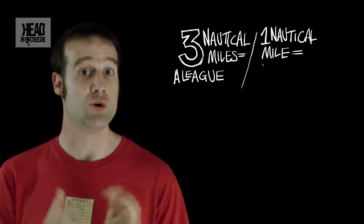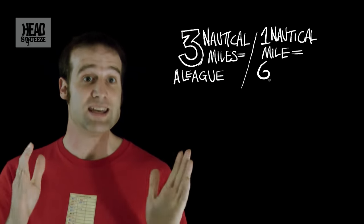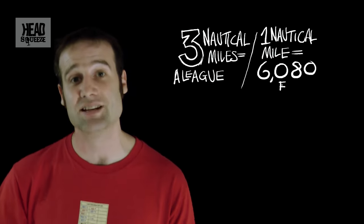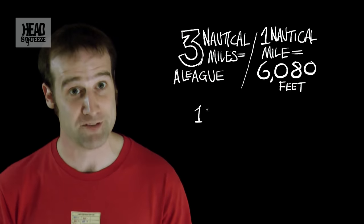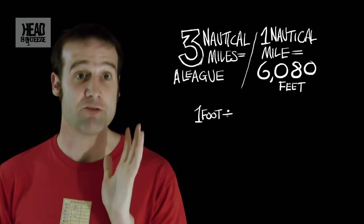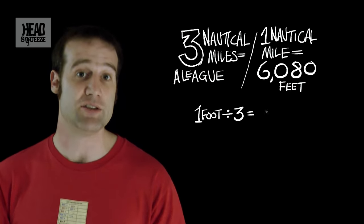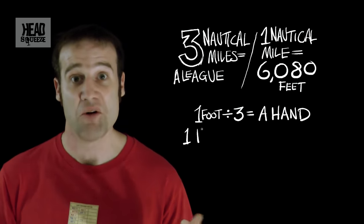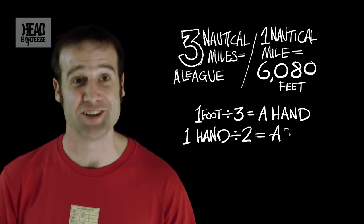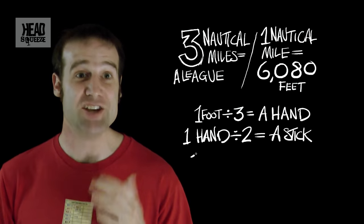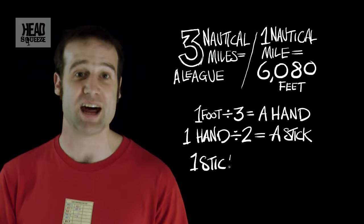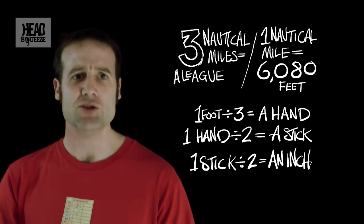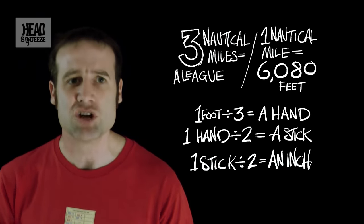Or alternatively, if you take a Nautical Mile and split it into Feet, you get 6080 Feet — we're back at Feet. If you take a Foot and you divide it in thirds, you get what's called a Hand. Of course, a Hand is exactly a third the size of a Foot. Each Hand, if you cut it in half, you get a Stick. Each Stick, if you cut it in half, you get an Inch.